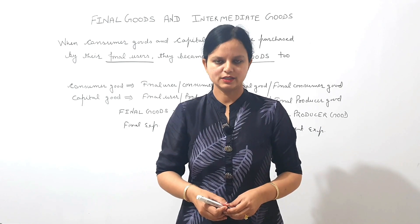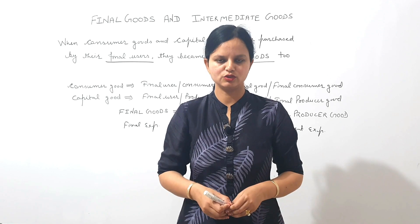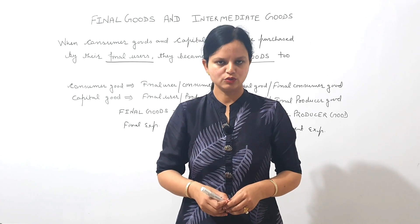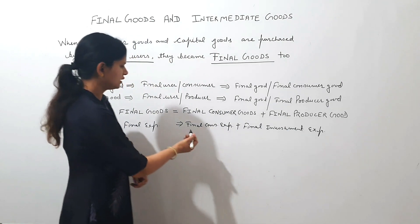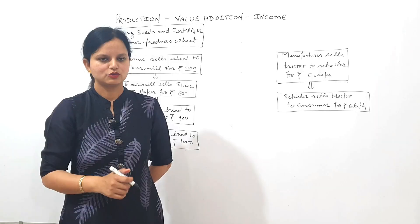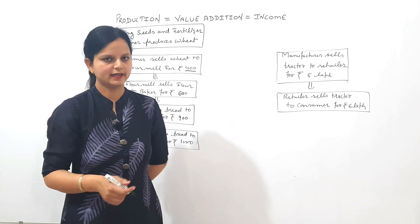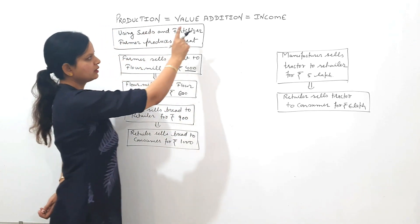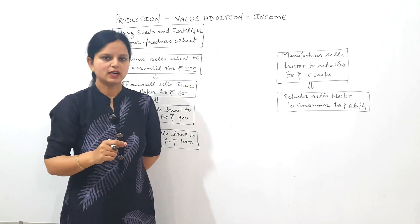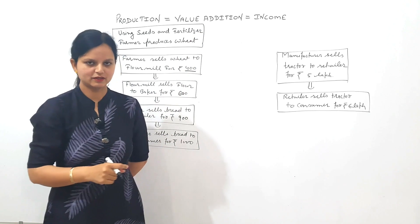We classify the people of any country into two categories: consumers and producers. Consumers do consumption expenditure and producers do investment expenditure. One more important point: production is equal to value addition, which is equal to income.